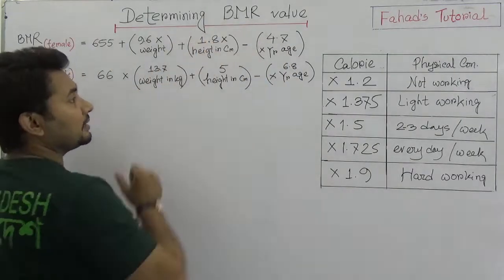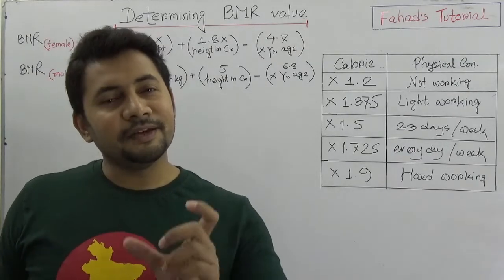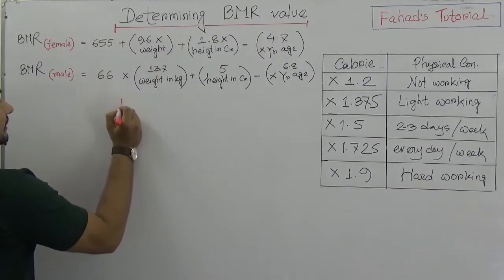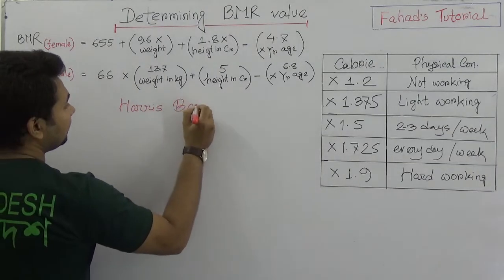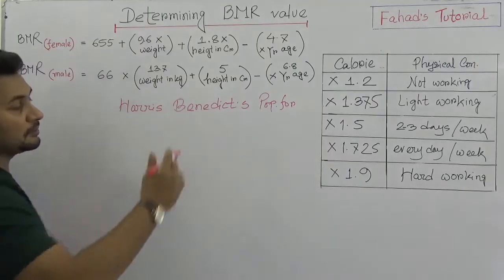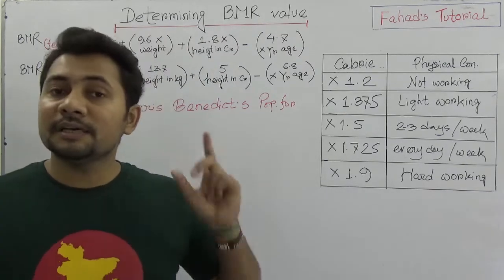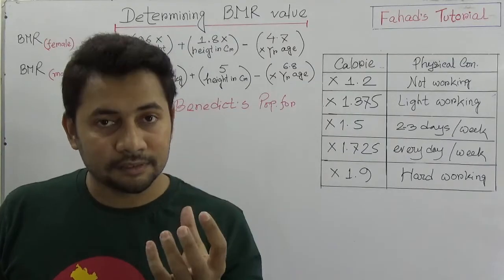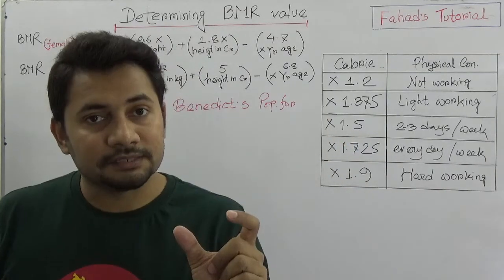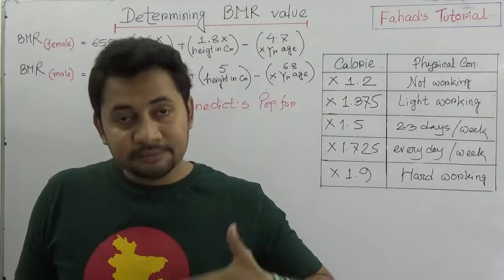BMR — Basal Metabolic Rate — can be determined through a very popular calculation which is called the Harris-Benedict Formula. This formula is used for both men and females to determine that person's BMR, which indicates the amount of energy required by a human being at the resting phase.